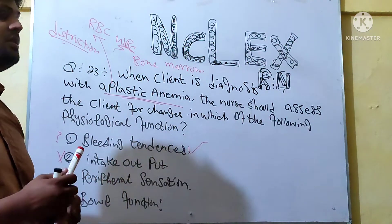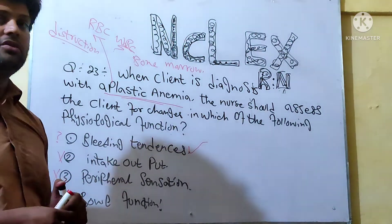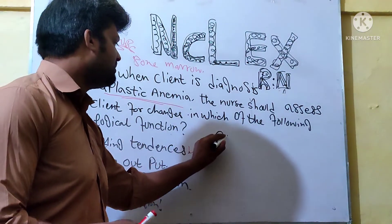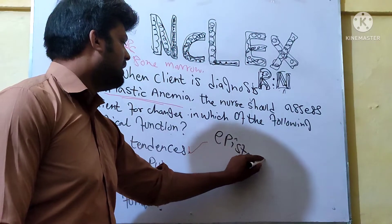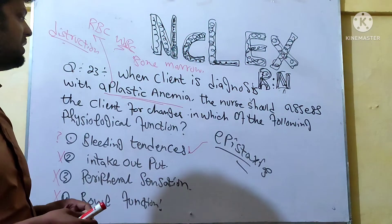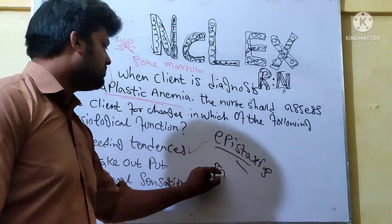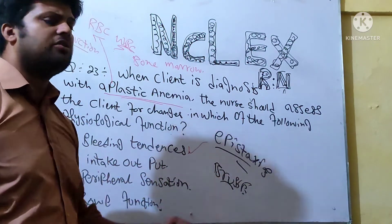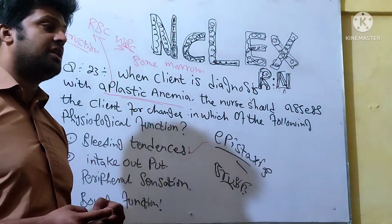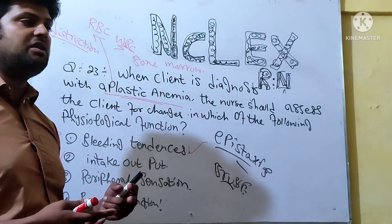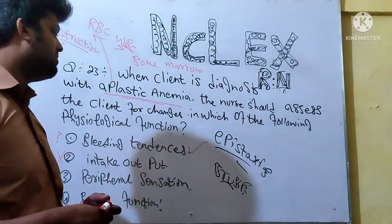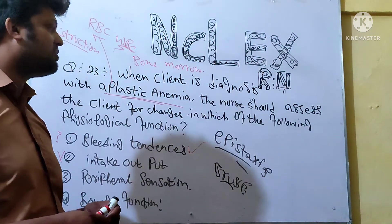Why? Because in Aplastic Anemia, the patient's platelets and WBCs are reduced. That's why the patient has a chance to get epistaxis — epistaxis means bleeding from the nose. There are also chances of infection, bruising, and patients are very susceptible to infection. If WBCs cannot fight infection, there are chances of developing septicemia.